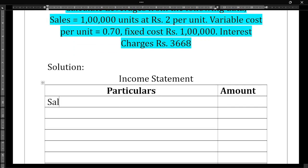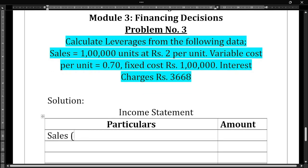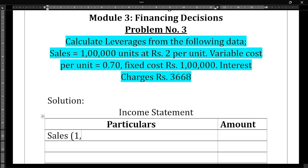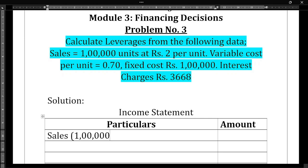In this problem, the sales value is not directly given — we need to calculate it. Total units sold is 1 lakh, multiplied by rupees 2 per unit, so we get sales of 2 lakh rupees.